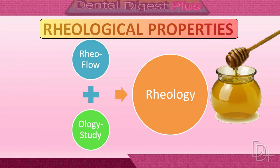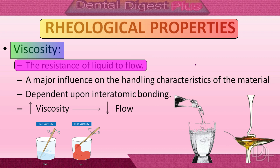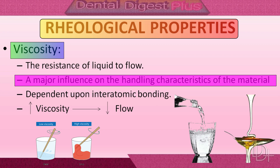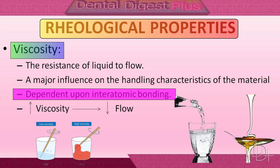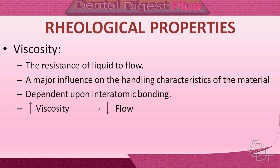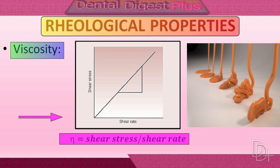The study of flow of a material is called rheology. Viscosity is the resistance of a liquid to flow — when placed in motion, liquids resist the imposed forces that cause them to move. This resistance to motion is called viscosity, and it has a major influence on the handling characteristics of a material. Viscosity is dependent upon interatomic bonding; for example, water molecules have weak interatomic bonding and flow easily compared to oil and honey. Viscosity is defined as shear stress divided by strain rate, with units of centipoise or megapascal per second. Pure water at 20°C has a viscosity of 1 centipoise.